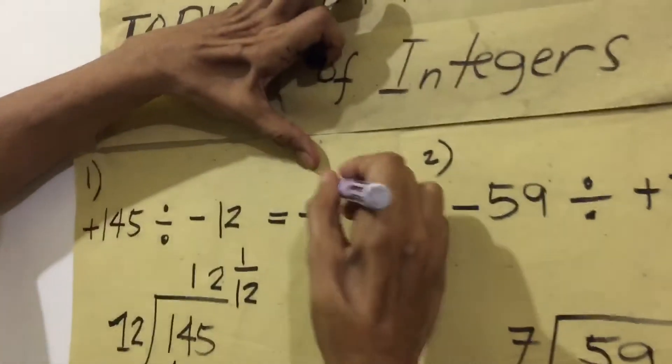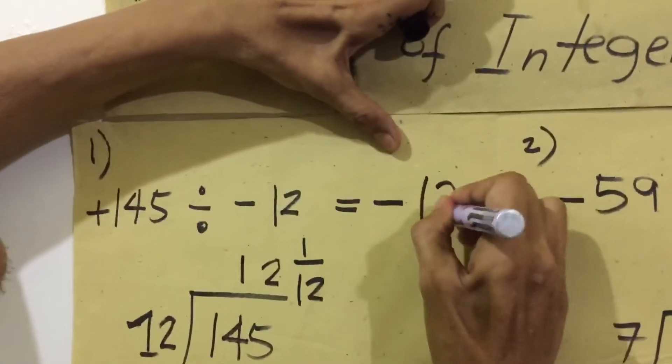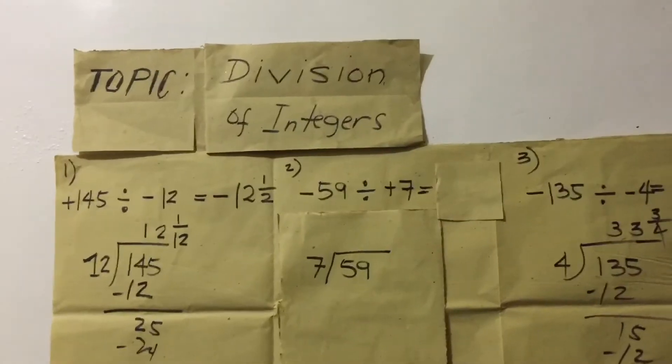And, our final answer here. We have 12, 1 over 2. Okay.